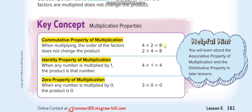The identity property of multiplication states that any number multiplied by 1 will give you the same number again. Any number multiplied by 1 equals that same number — that is the identity property of multiplication.